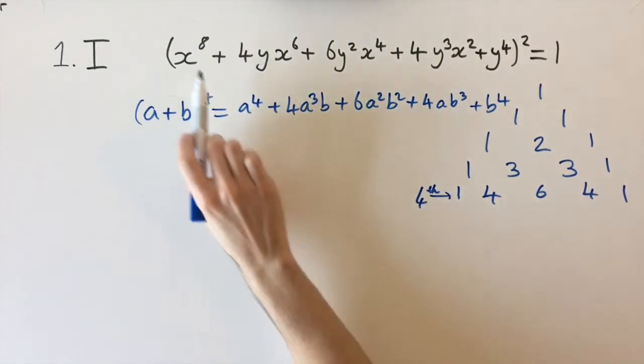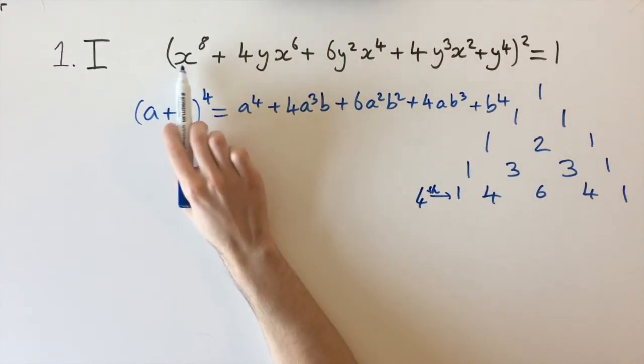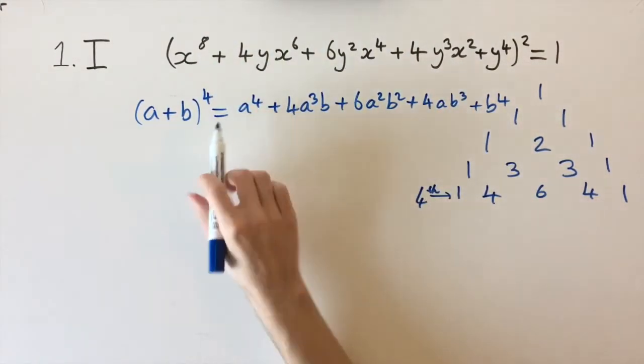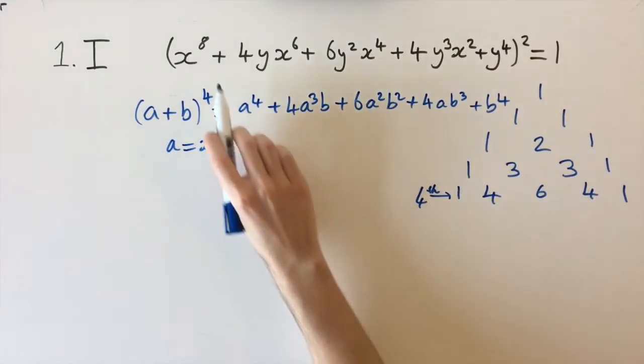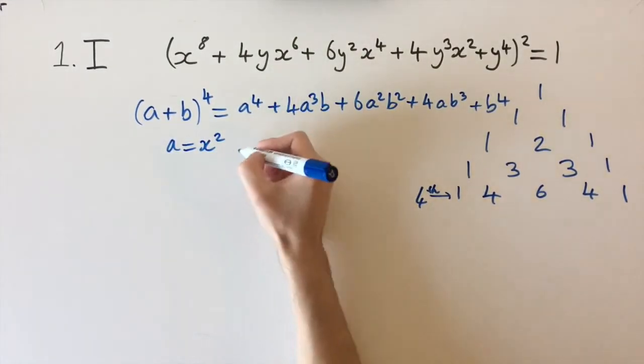We can see since x takes powers 8, 6, 4, 2, we want a to be x squared, and we get exactly that. Then for b, we can just take b equals y.